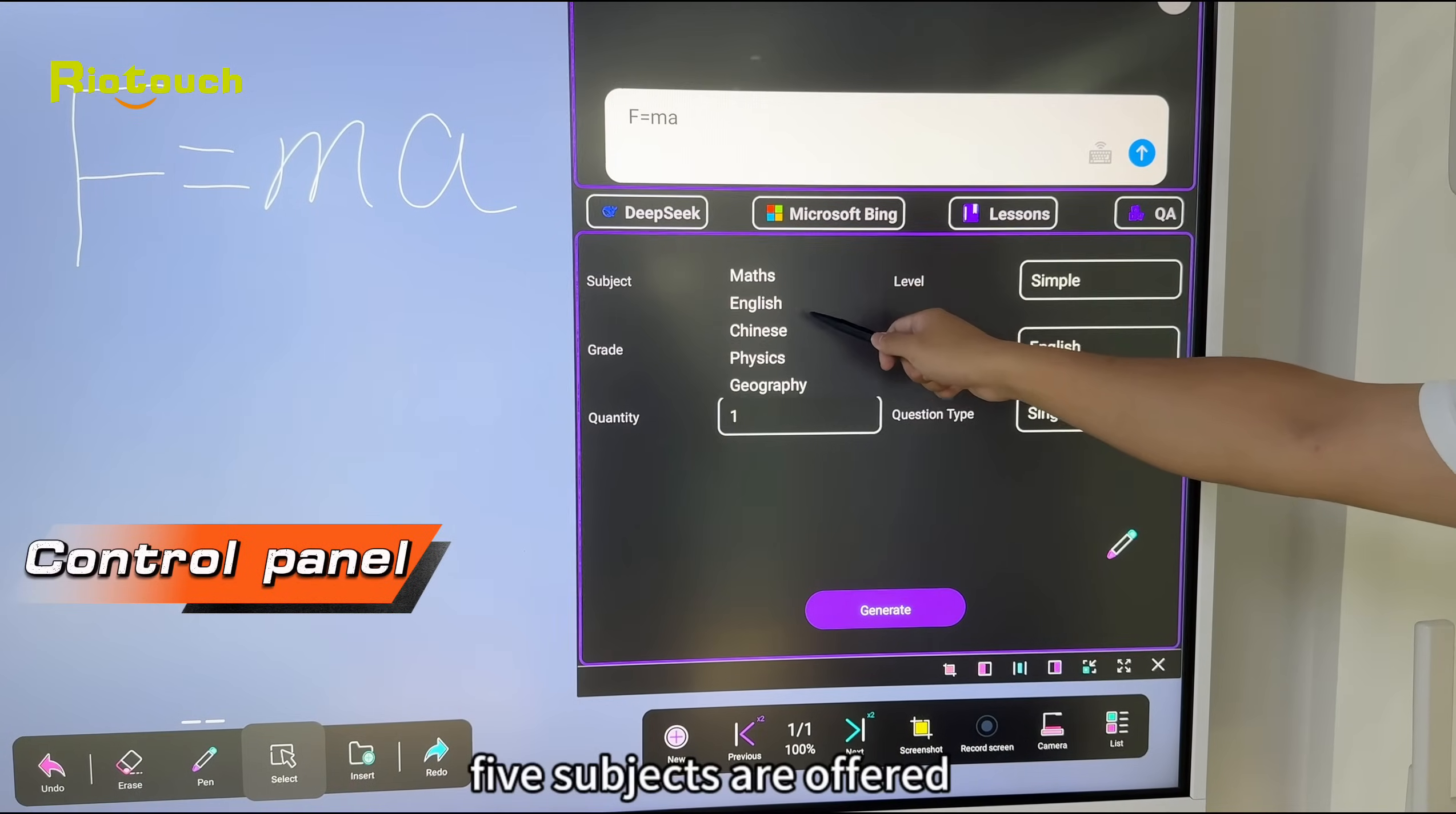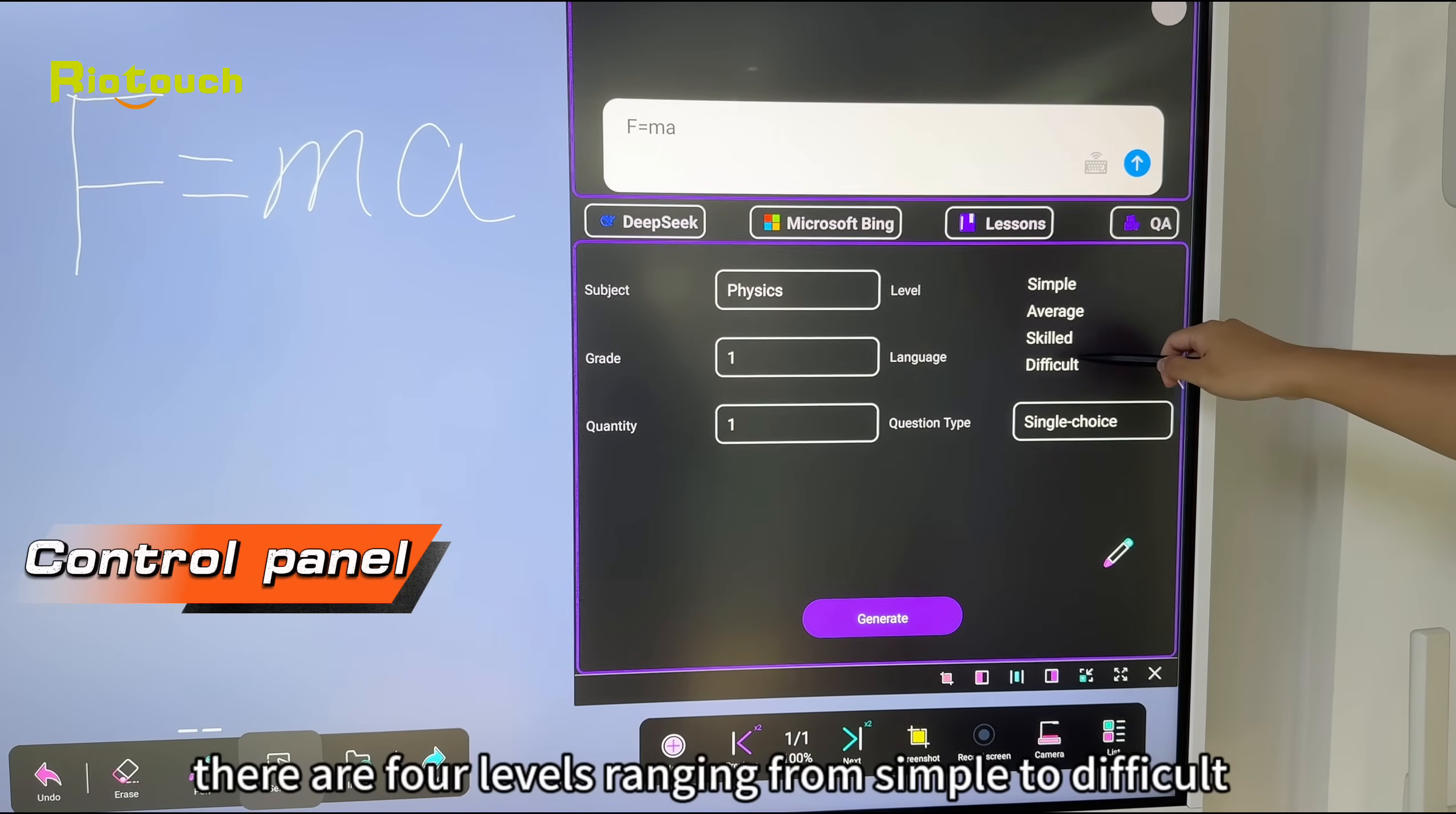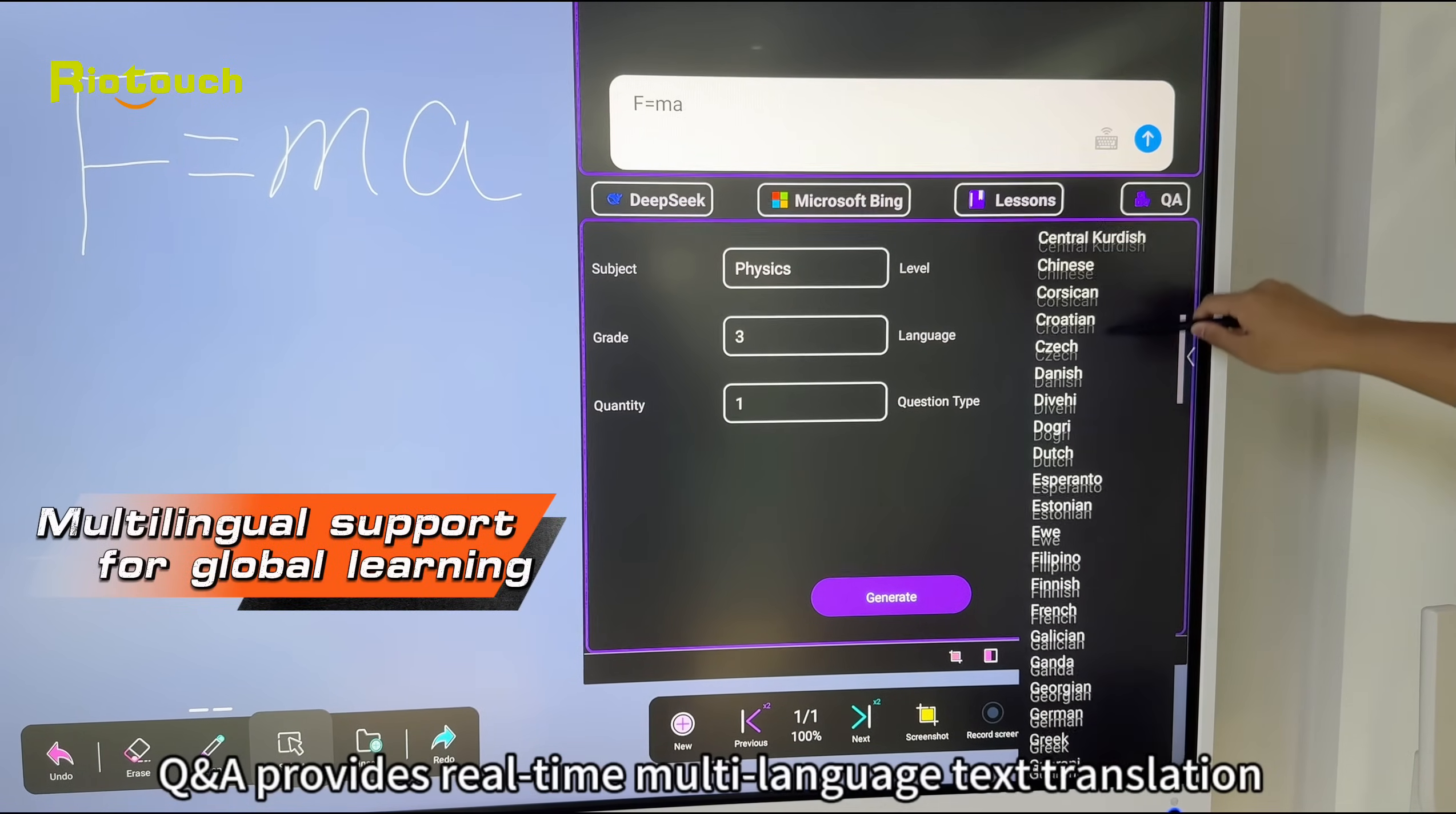Within QA, five subjects are offered. When selecting the question difficulty, there are four levels ranging from simple to difficult. QA provides real-time multi-language text translation.